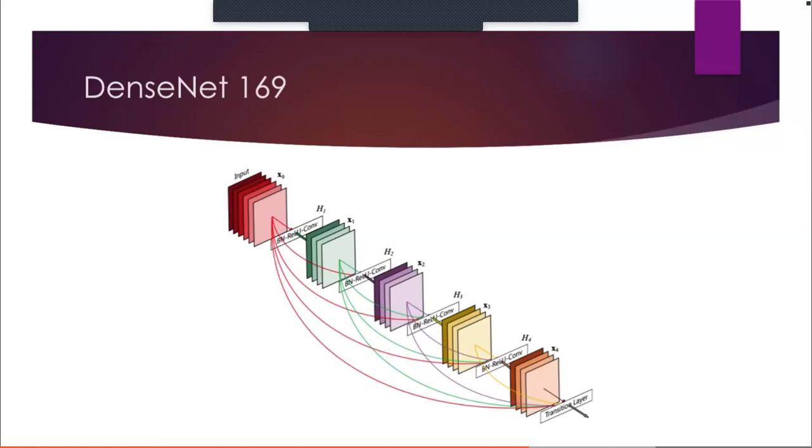We use DenseNet 169 architecture as the encoder in most of our experiments and train it in the encoder-decoder setting. This architecture is trained on the ImageNet dataset and works quite well in extracting meaningful features from images.